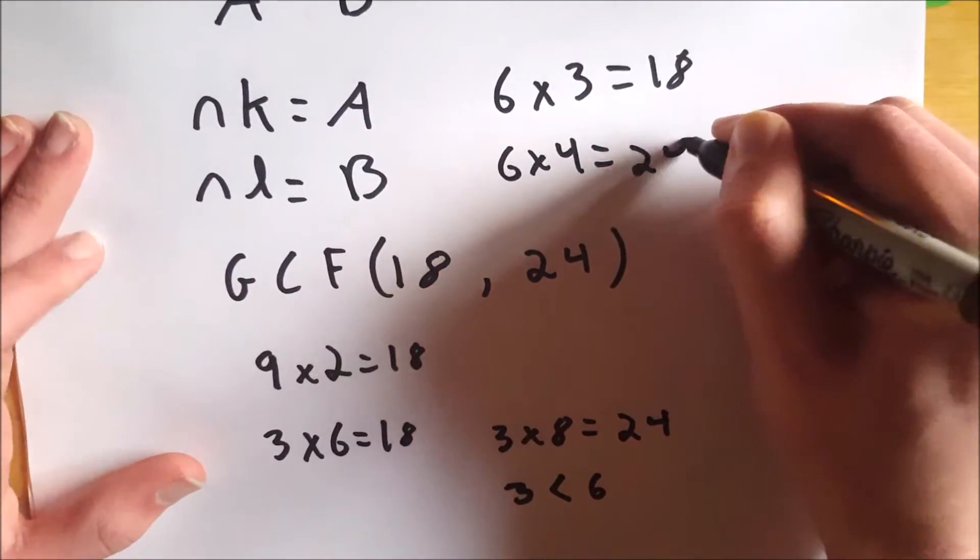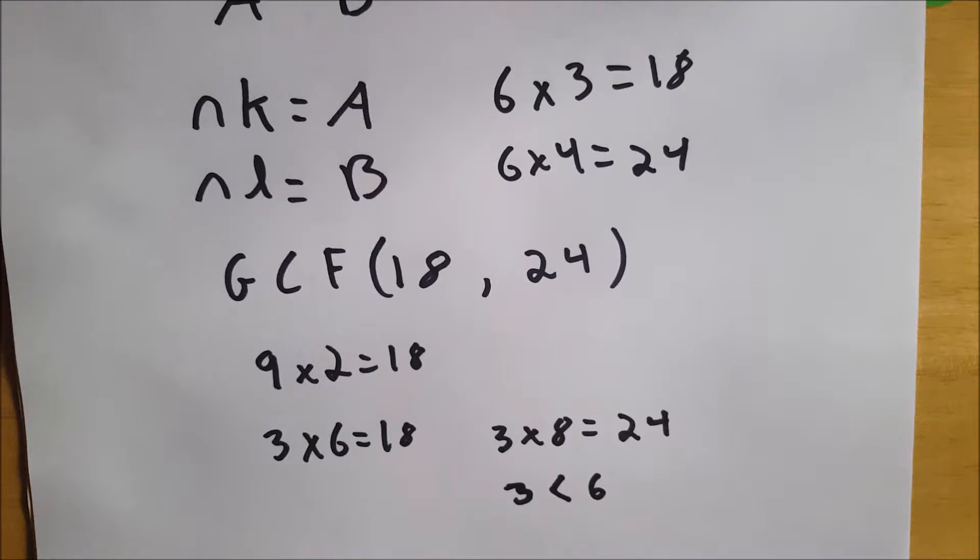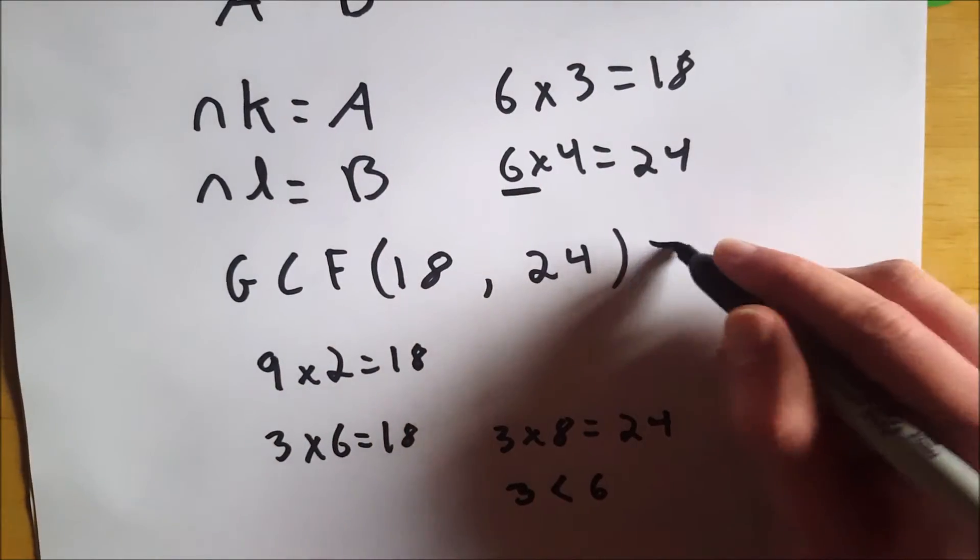Is there any other number that's bigger than 6 that goes into both 18 and 24? No, there is not. So 6 is your greatest common factor.